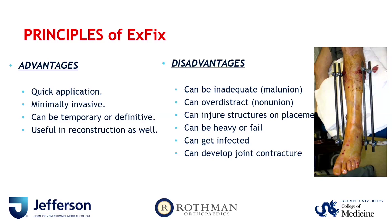Some of the advantages of external fixation: it's quick to apply, minimally invasive, can be both temporary or definitive, and can be useful in reconstructions such as malunions, nonunions, and infection cases. Some disadvantages: it can often provide inadequate fixation and lead to malunions; it can over-distract and lead to nonunions; it can injure nerves and tendons during placement; it can be heavy for patients to manage; it can fail during use; it can get infected; and if there's too much tension, you can develop joint contracture.